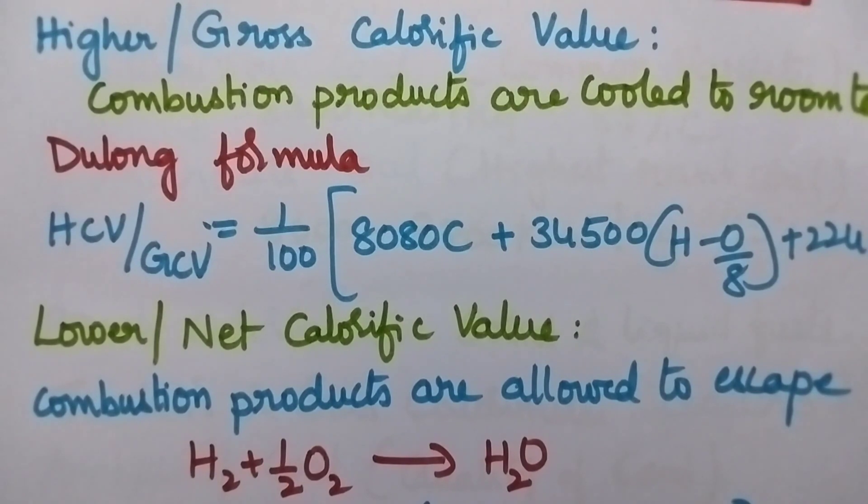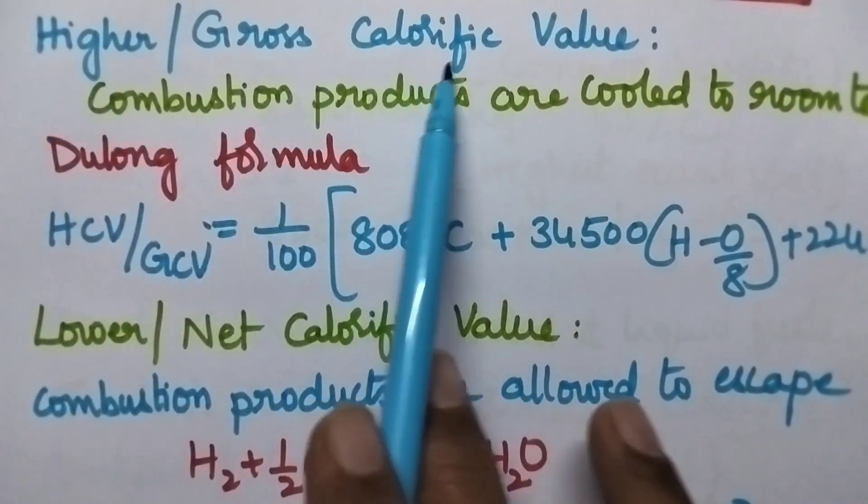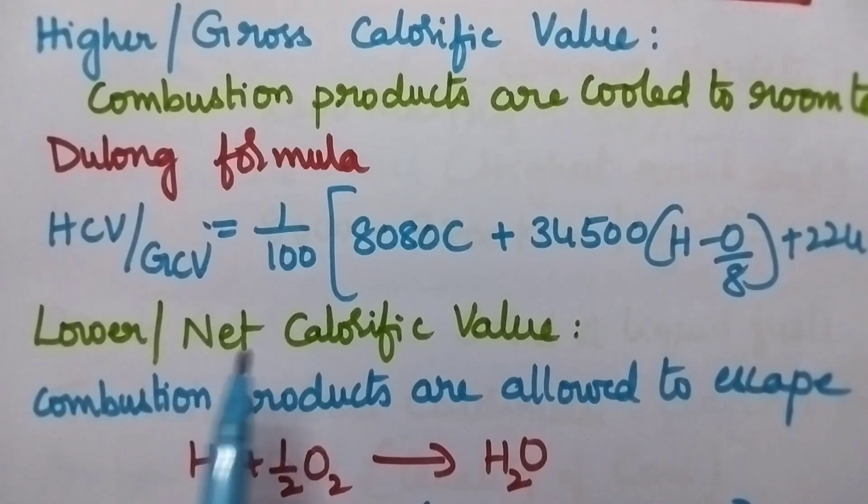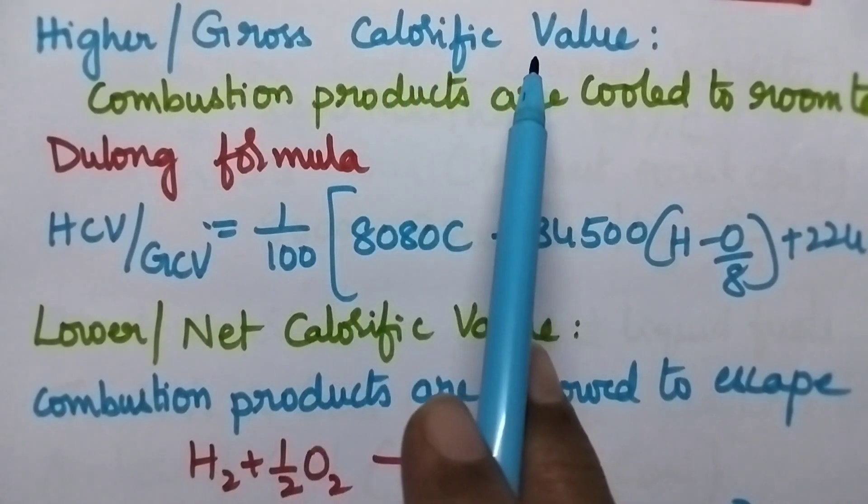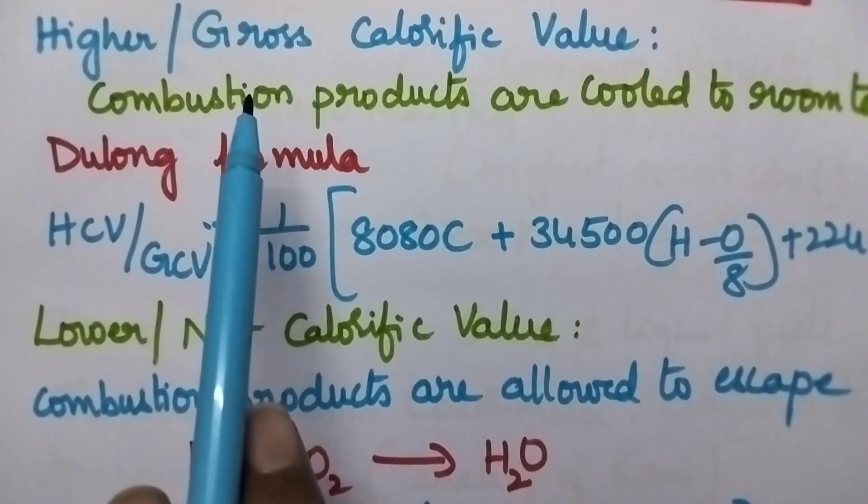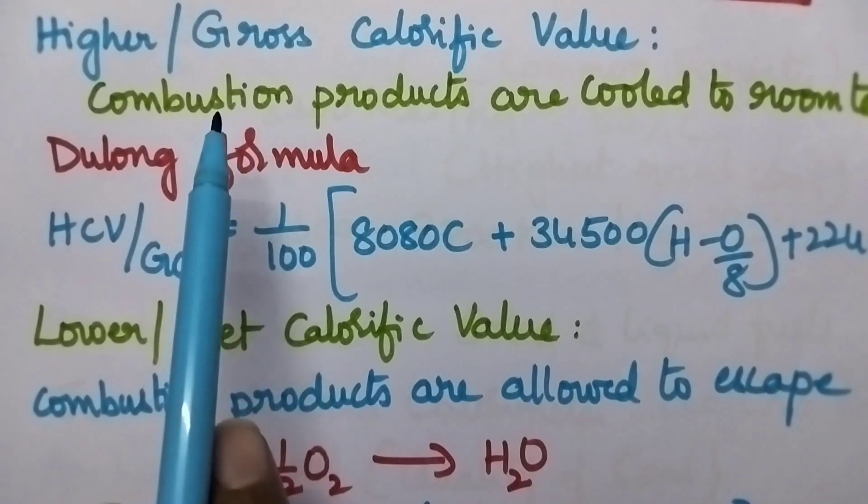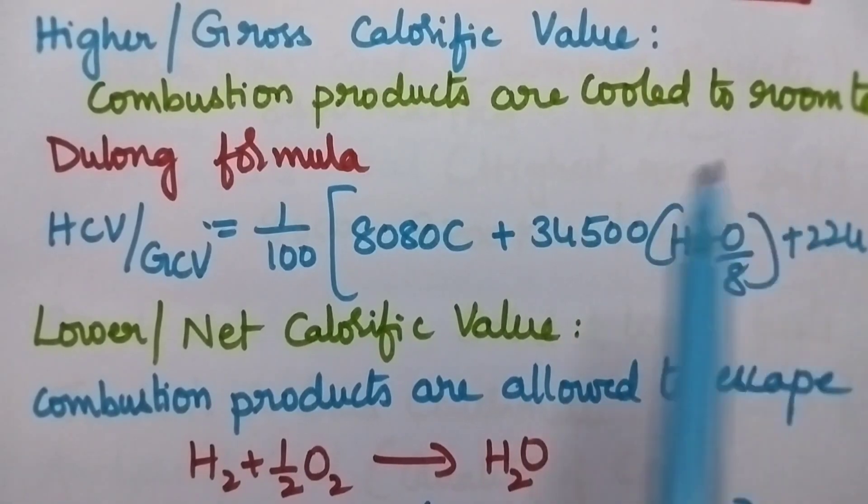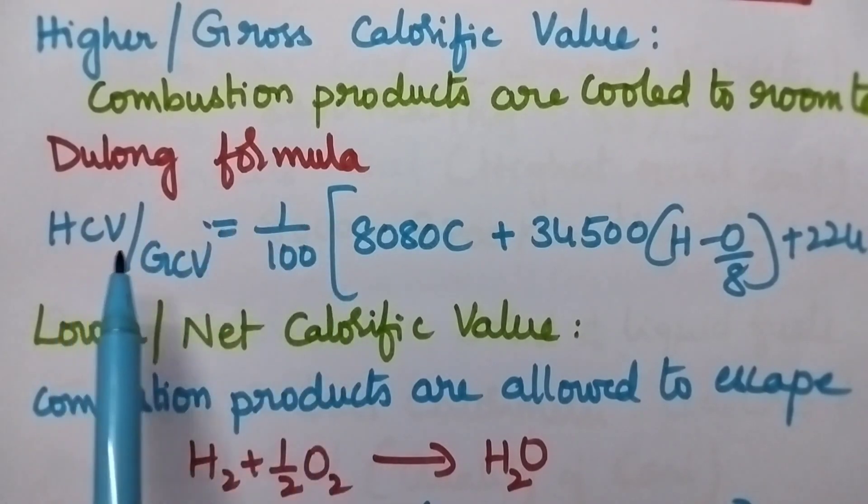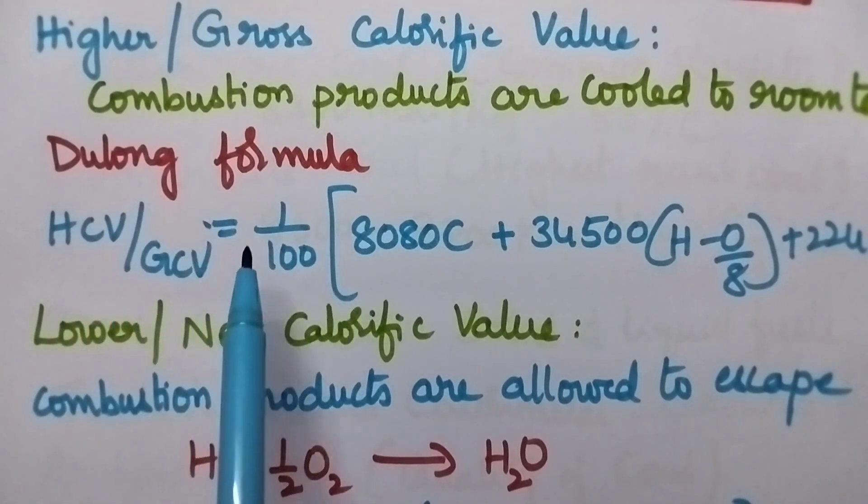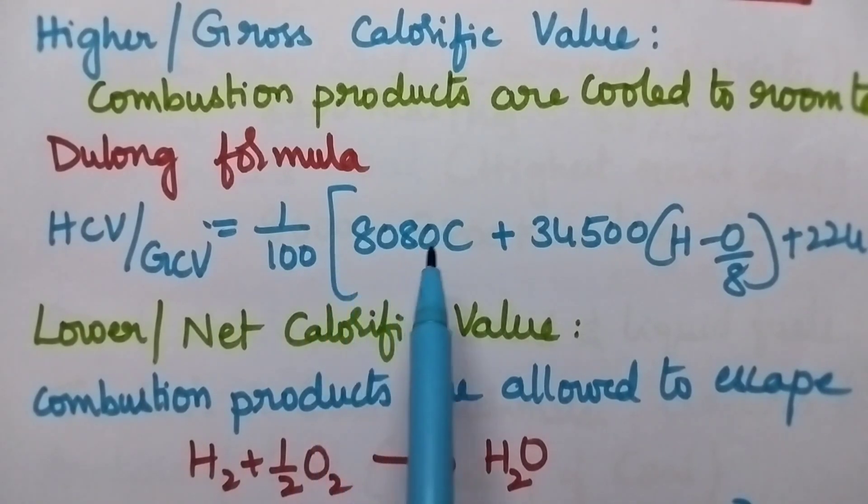Calorific value can be classified into two categories: higher calorific value and lower calorific value. Higher calorific value is also known as gross calorific value. So it can be defined as the amount of heat liberated when one unit mass of the fuel is burned completely and the combustion products are cooled to room temperature. Here no heat is wasted. According to Joolong formula, HCV or GCV is equal to 1/100 into 8080 C plus 34500 H minus O/8 plus 2240 S.